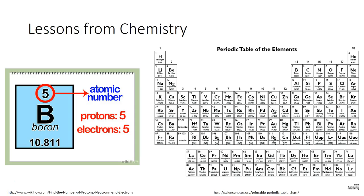The periodic table is organized by the atomic number. We need to be careful in this chapter that we don't confuse protons and electrons. Protons have a positive charge and are in the nucleus of the atom. They don't move around and we don't change the number of them. When we talk about ions and charging objects, we're talking about adding or removing the electrons.